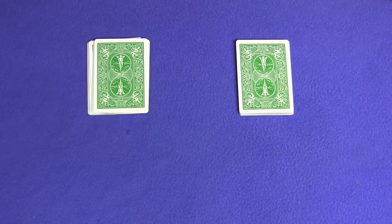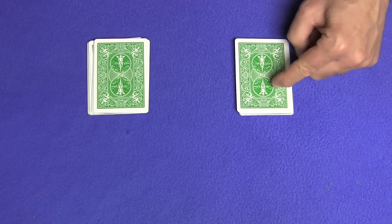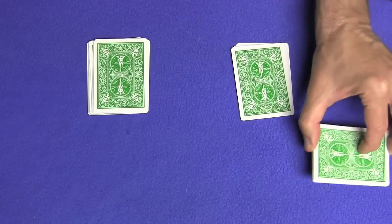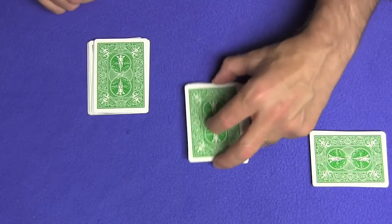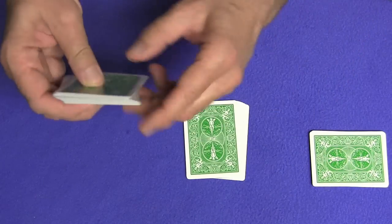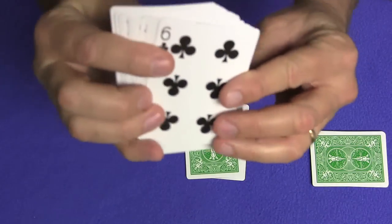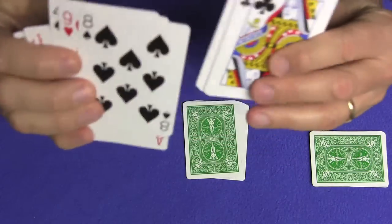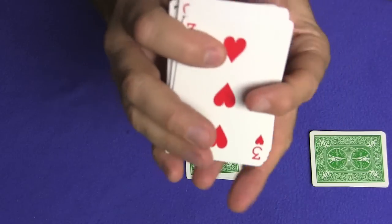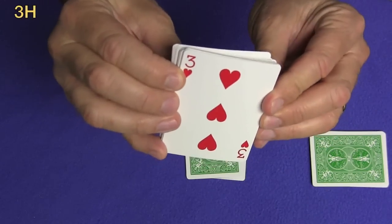So they can decide which pile to choose the number from. Let's say this pile. So they're going to cut off a random number of cards and set it over here. And this pile, you're going to let them select a card. You can go through the cards just like this and say, when you see one, just tell me to stop. Let's say they say stop right over here. They're remembering the three of hearts.